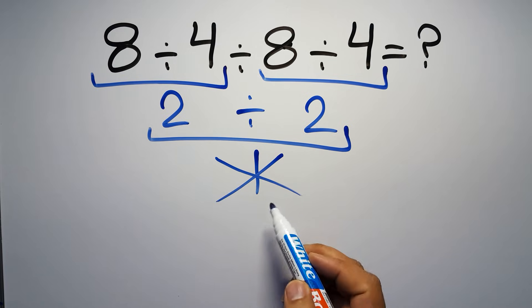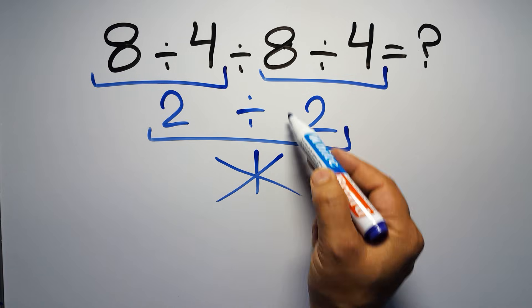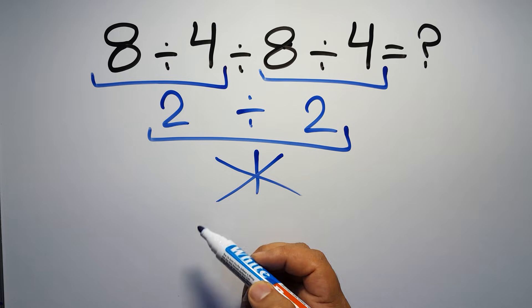and finally this division. If we do this division before this division, it is wrong